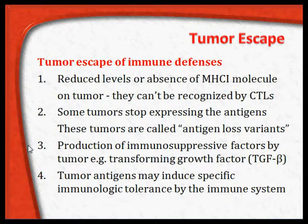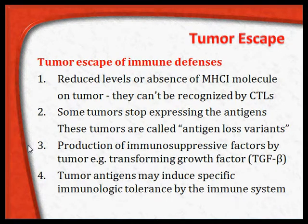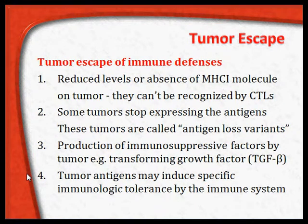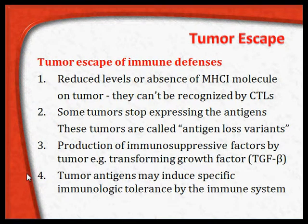Another mechanism is production of immunosuppressive factors by the tumor itself. Once tumor cells are formed, they produce proteins and other chemicals such as transforming growth factor TGF-beta, which suppresses the immune system. Additionally, tumor antigens may induce specific immunological tolerance. Just as small doses of antigens are used to desensitize asthma patients, small doses of tumor antigens slowly lead to immune tolerance, causing the immune system to fail to recognize the mutated cells, allowing them to proliferate and produce tumor mass.